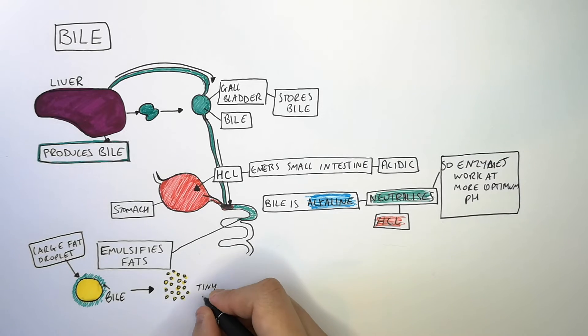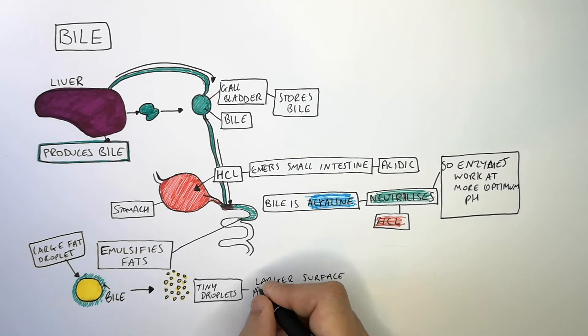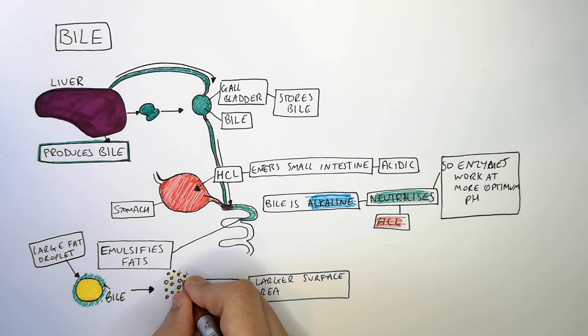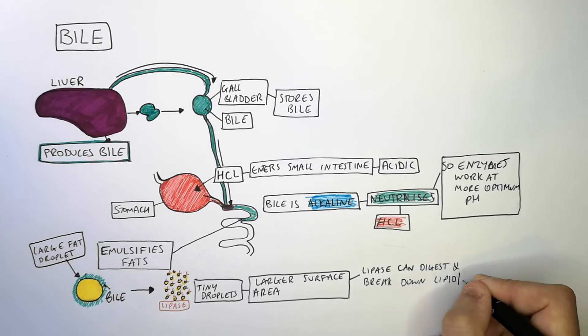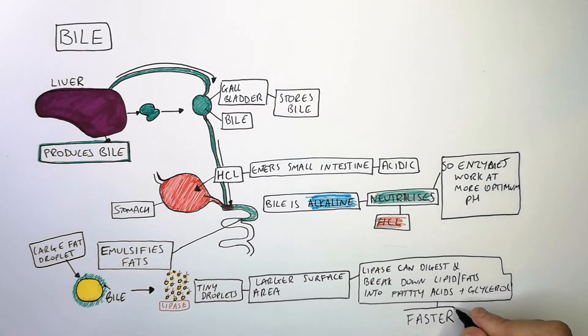Whereas if you emulsify those fat droplets using bile into tiny droplets, you increase the surface area. That means that the lipase in the small intestines will break down the fats into glycerol and fatty acids much more quickly, so it'll break it down faster.